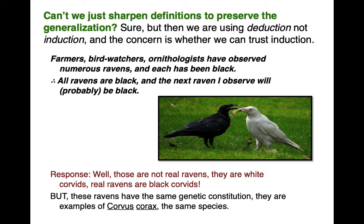But can't we just sharpen definitions to preserve the generalization? Isn't it just true by dictionary that all emeralds are green? Well, you have to ask: how did that definition get in there? It's acceptable because people believe emeralds are green because all the emeralds they've seen are green. However, now we are aware of emeralds that aren't green. The dictionary catalogs the ways terms are used — emeralds typically, often, are green, yet sometimes they're not. The definition is downstream from our reasoning. We can sharpen definitions, but then we are using deduction, not induction. If we simply stipulate that's the thing about emeralds — that they're green — we haven't really justified thinking based on past observations. The issue here is whether we can trust induction.